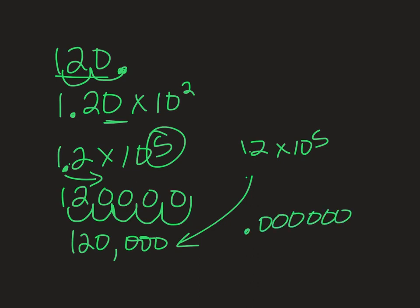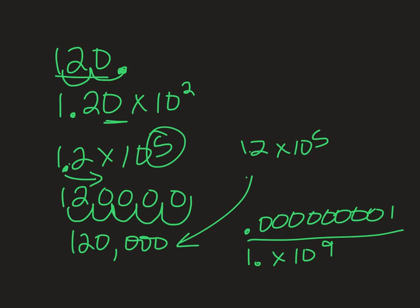What if we want to do 0.000000001? That's a small decimal number, so we're going to put the decimal behind that 1 and count how many places we need to move the decimal point: 1, 2, 3, 4, 5, 6, 7, 8, 9. We had to move it 9 places, so we make the exponent a 9. And since this is a decimal number, we make the exponent negative. So 0.000000001 is the same thing as 1 times 10 to the minus 9.